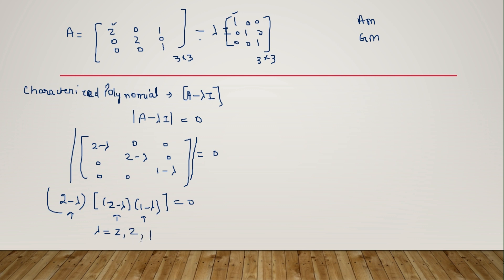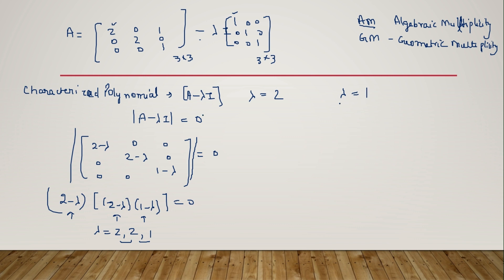So what do we mean by algebraic multiplicity? Algebraic multiplicity is the number of times a particular eigenvalue is repeated. For example, we have eigenvalues lambda equals two and lambda equals one. The value two is repeated two times, so algebraic multiplicity for lambda equals two is two. For lambda equals one, it appears only once, so algebraic multiplicity for lambda equals one is one.